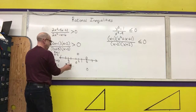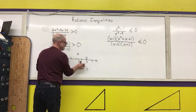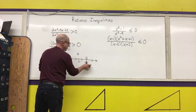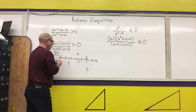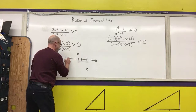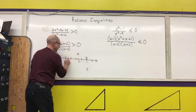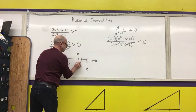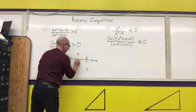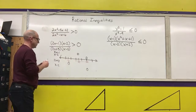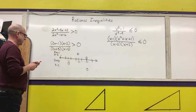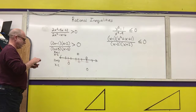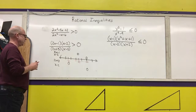I'm going to change the color of the numbers on my number line so they don't get confused with the black zeros. So my points are negative three-halves, one-half, and two. Now I'm going to do a sign analysis on each one of my factors.